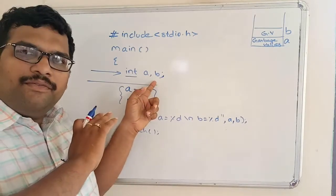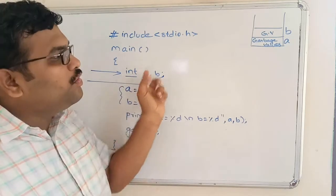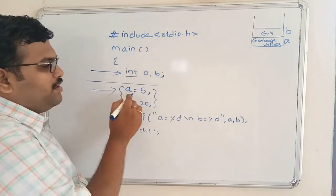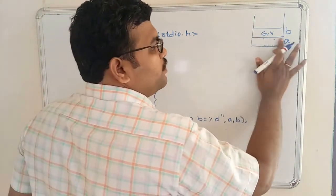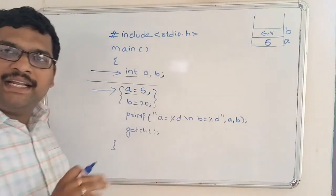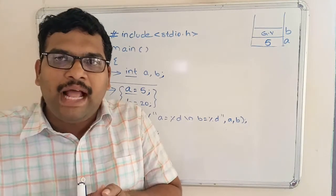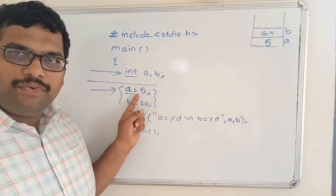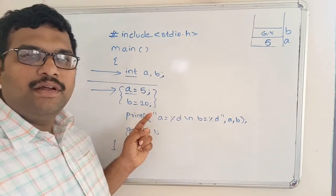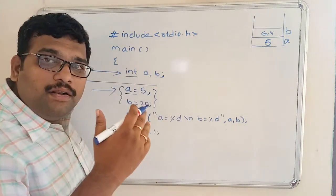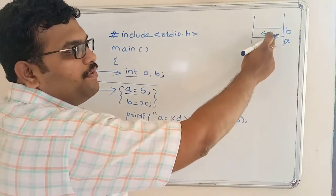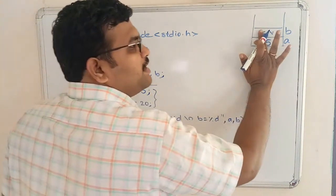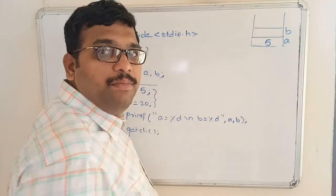After the first statement, we have not given any value to both variables. So two memory locations will be created with names 'a' and 'b' and filled with garbage values. Immediately after executing 'a = 5', this garbage value will be replaced with 5. This is called initialization — assigning a value to the variables. Similarly, 'b = 20' is also initialization, replacing the garbage value in 'b' with 20.